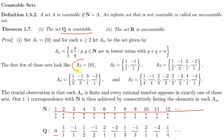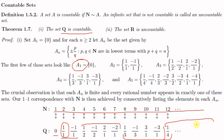We list out the elements in A₁, A₂, A₃, A₄, A₅, and so on. Each rational number appears in this list exactly once, because each rational number belongs to exactly one of the Aₙ's. So every natural number corresponds to exactly one rational number, meaning this correspondence is one-to-one.